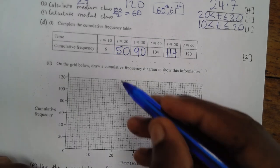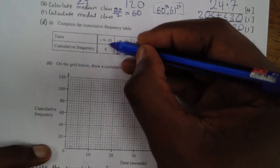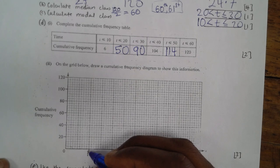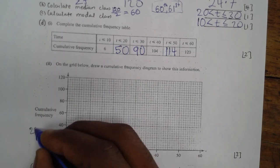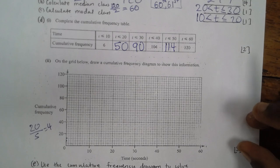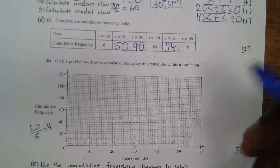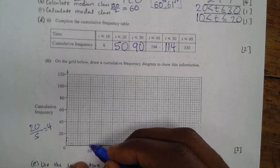Our first class ends at 10. I need to understand the scale on my vertical axis — I have 5 small boxes to represent 20, so 20 divided by 5 gives 4 for each small box. At 10, I need to plot 6, so that falls in the middle of a box.